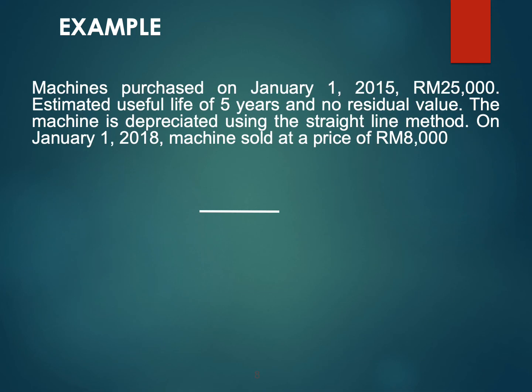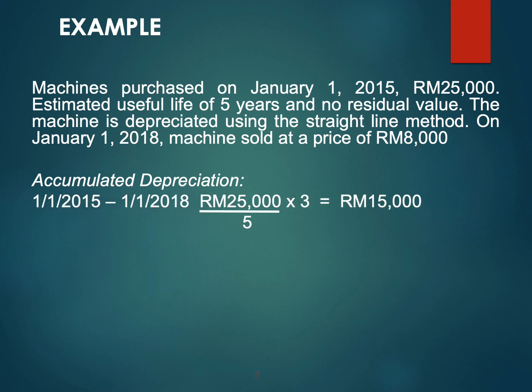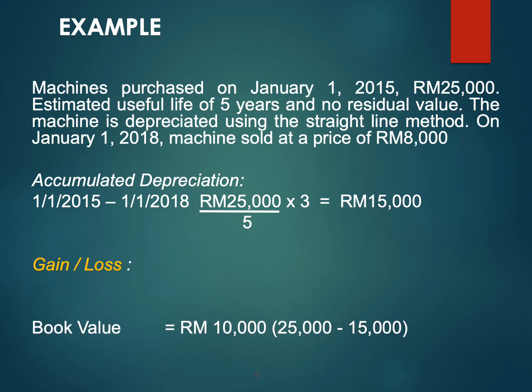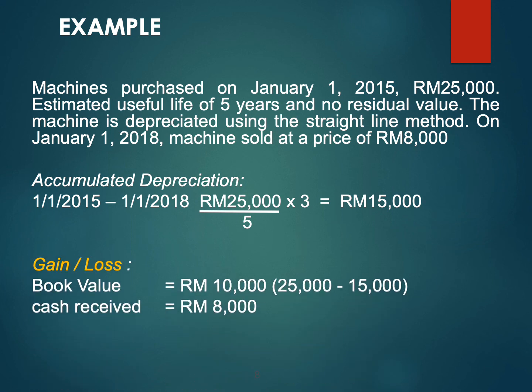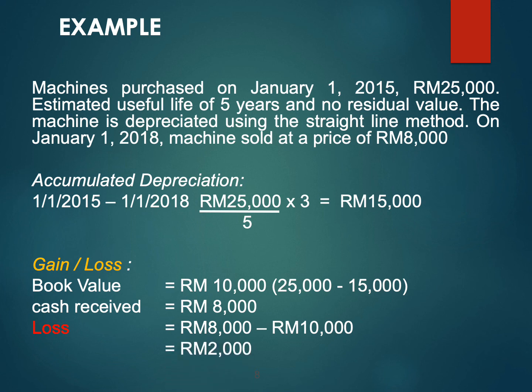Another example: machine purchased on January 1, 2015 for 25,000, with an estimated useful life of 5 years and no residual value. The machine is depreciated using the straight-line method. On January 1, 2018, the machine was sold at a price of 8,000. The machine has been used for 3 years, so accumulated depreciation is 15,000. Comparing book value of 10,000 with cash received of 8,000, since cash received is lower than book value, the loss will be 2,000.